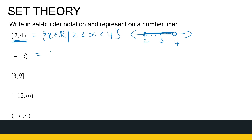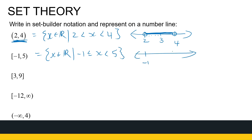The next example is the interval from minus 1 to 5, written [-1, 5). It's all real numbers X where minus 1 is less than or equal to X, which is less than 5. Minus 1 is included but 5 is excluded. So this set has a smallest element — minus 1 — but no largest element, since values keep getting closer to 5 without ever reaching it.